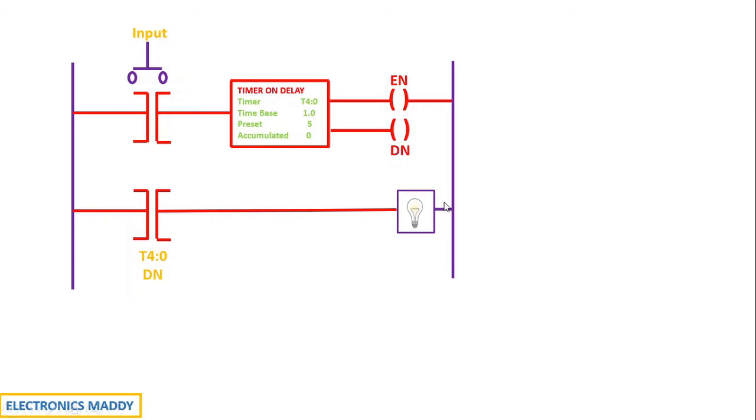Now, I want to light this load using an input and using a timer. The reason why I need this timer is, for example, once I press this input, I need five seconds delay and then the light should turn on after five seconds. Then I obviously need a timer. So the timer has to count for five seconds. After five seconds, this light should be turned on.